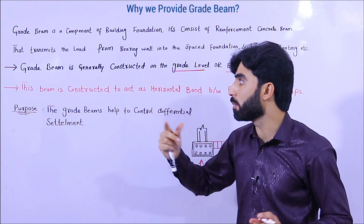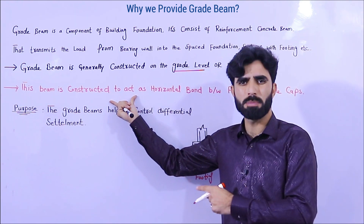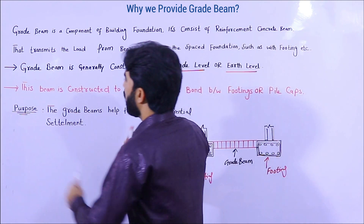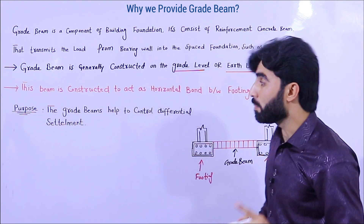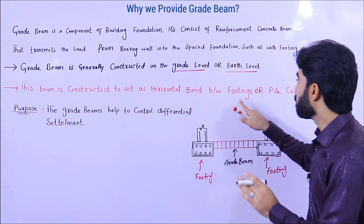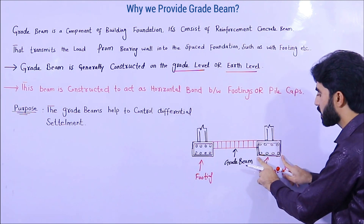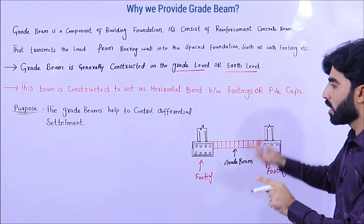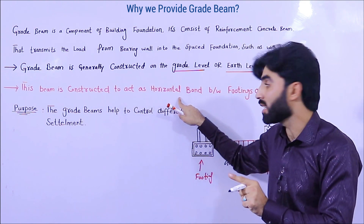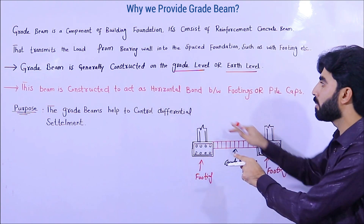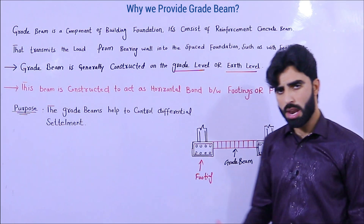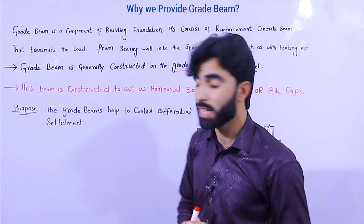The purpose of grade beam: this beam is constructed to act as a horizontal bond between footings or pile caps. As you can see in the diagram, between two footings we construct this beam, which makes a horizontal bond between the footings and pile caps.